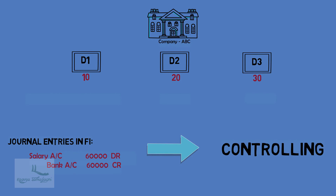For example, assuming all employees draw equal salary and applying ratio and proportion for calculation: the total salary expense for Department D1 is 10,000 USD, for Department D2 it is 20,000 USD, and for Department D3 it is 30,000 USD.